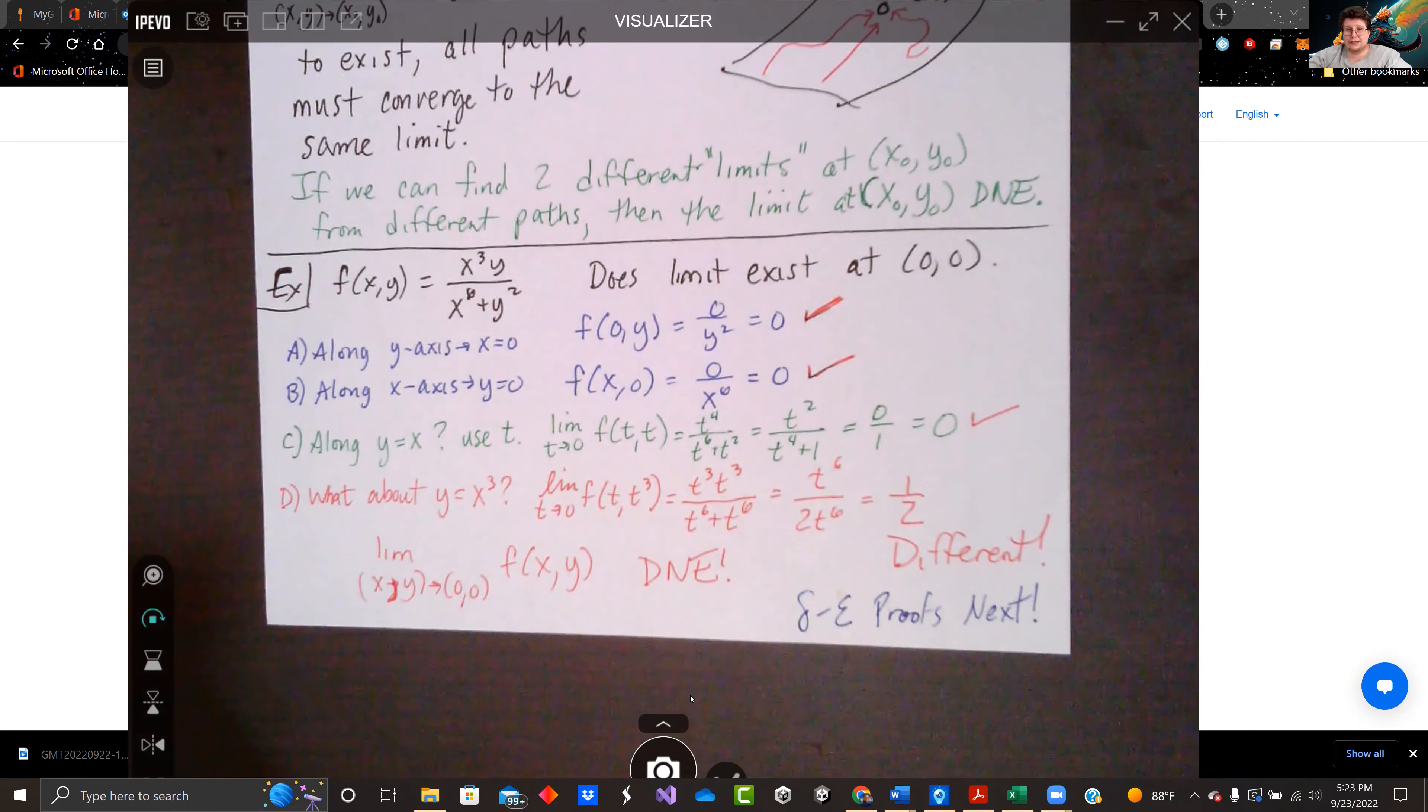Following this method, we can only prove it doesn't exist if we find two that don't match. But you could try hundreds of different lines, parameterizations, and never find one that's different, and it still might not exist. So this picking a path isn't reliable.